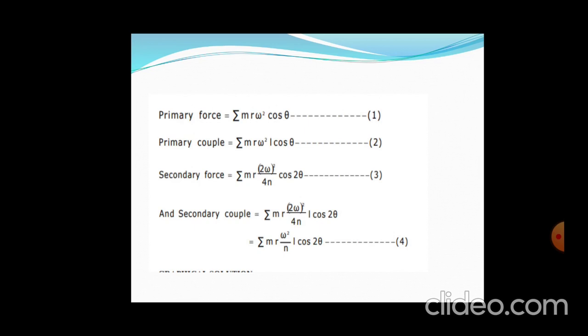The basic difference between primary and secondary forces: the primary force is mr·ω²·cosθ, while for secondary it is mr·(2ω)²/(4n)·cos2θ — theta becomes 2θ and omega becomes 2ω with a factor of 4n. For couples, the difference is only the addition of the length term l. So the key distinction between force and couple is just the length l.